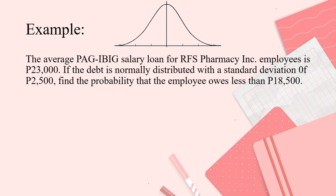We are solving for the probability that the employee owes less than 18,500 pesos. Again, we have Z is equal to X minus mean over the SD. So let's get the formula. And after the formula, write the given. What is the X? What is the mean? What is the SD? So what is our mean?